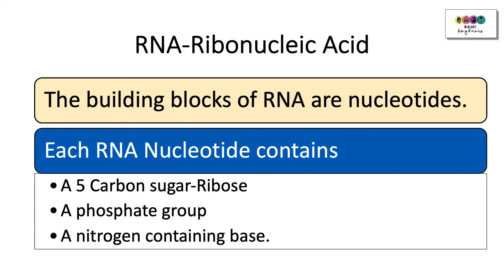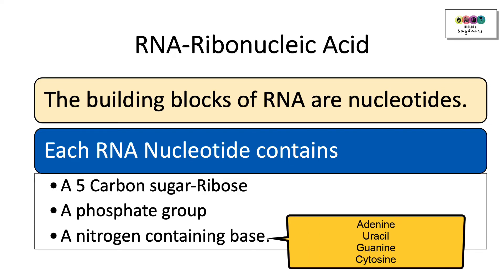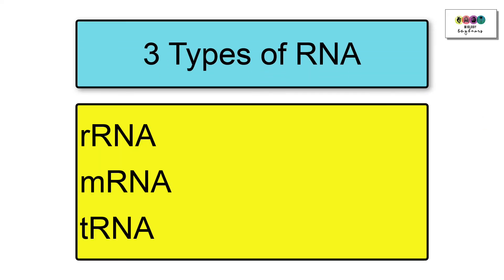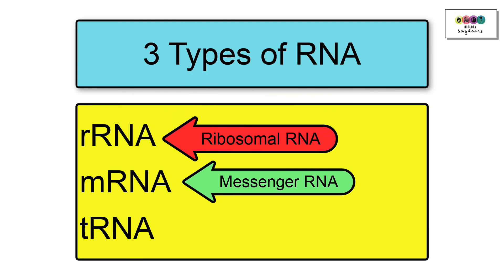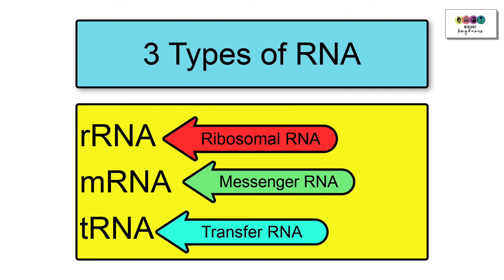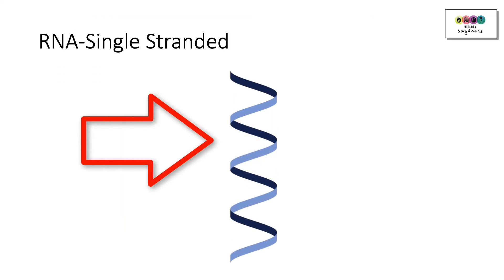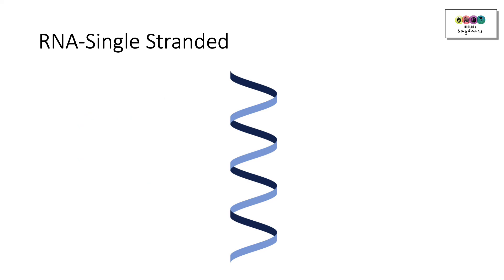To summarise RNA: its name is ribonucleic acid, its building blocks are nucleotides, each RNA nucleotide contains ribose, a phosphate group, and one of four nitrogen-containing bases — adenine, uracil, guanine, and cytosine. It's important to know that there are three types of RNA: ribosomal RNA, messenger RNA, and transfer RNA. You need to know the role of messenger RNA and transfer RNA in protein synthesis. RNA is also a single-stranded molecule — very important to remember.